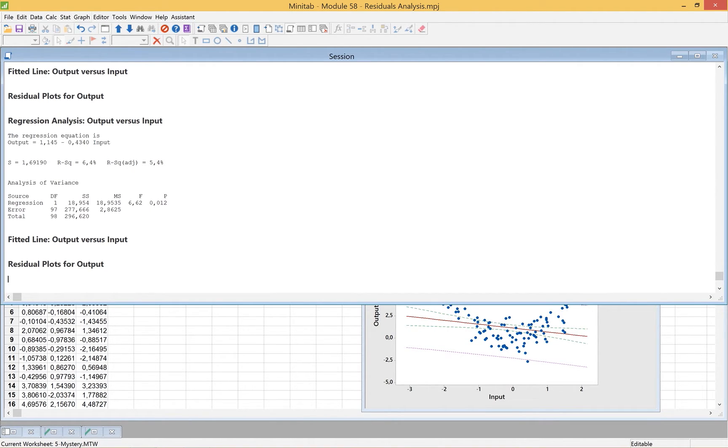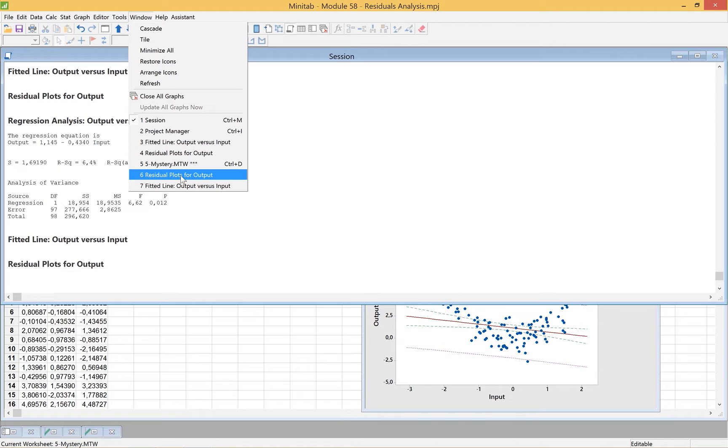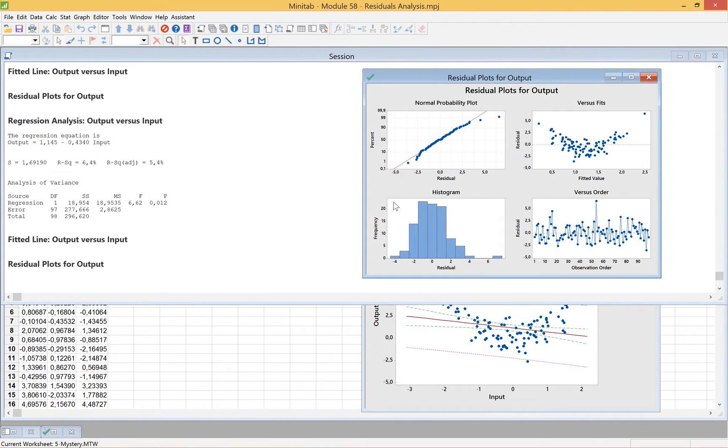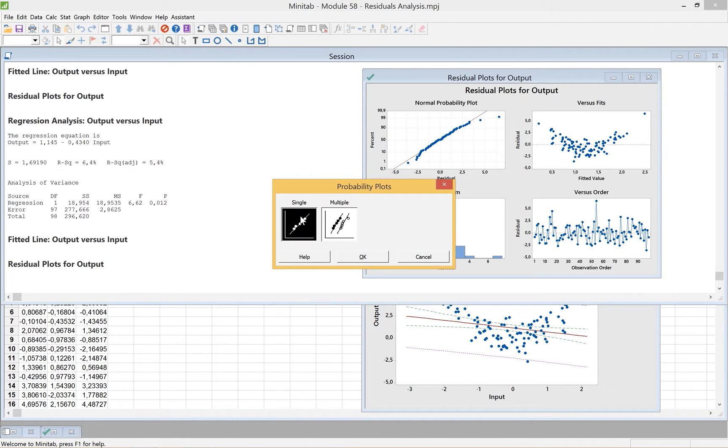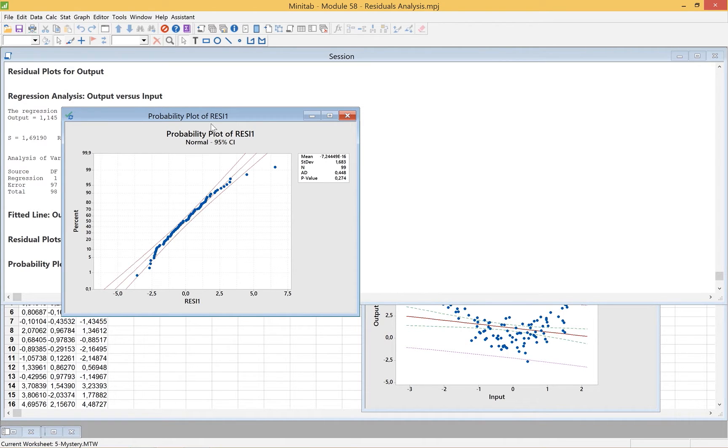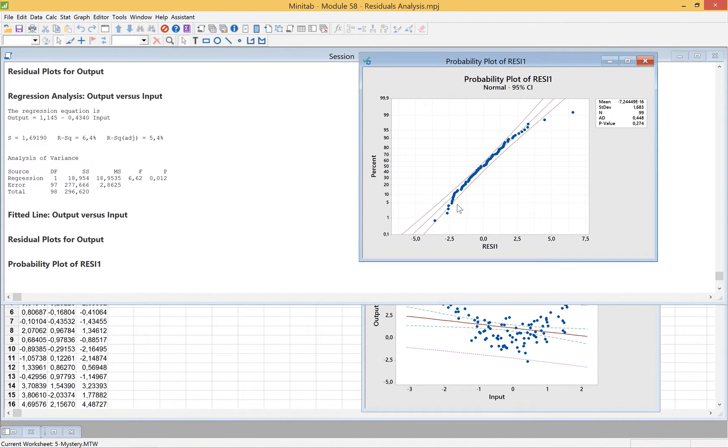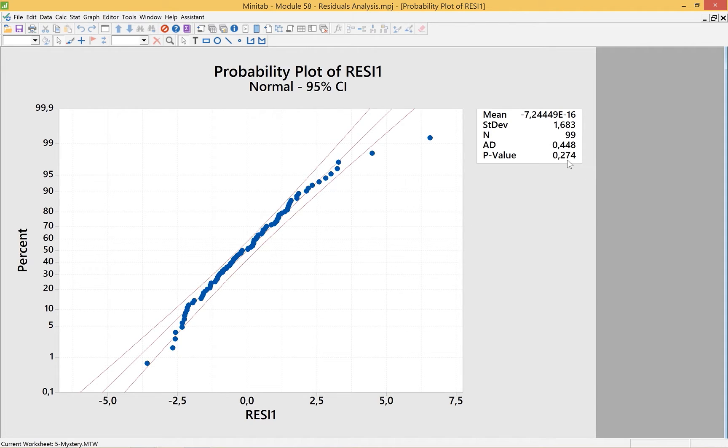Instead of just doing the probability plot that was in the residuals analysis, let's do Graph and a Probability Plot. We'll take a look at the single probability plot. The data has had this residuals. We'll just plot and click OK. Now what we see is we've got the confidence interval, 95% confidence interval. But we've got some data outside the confidence interval. Here is the p-value. It's greater than 0.05, so it says the data is essentially normal.